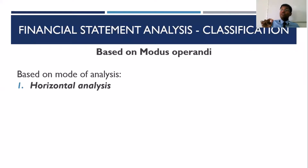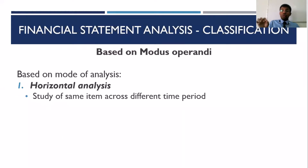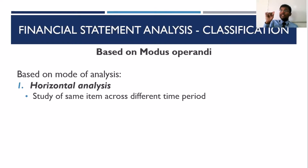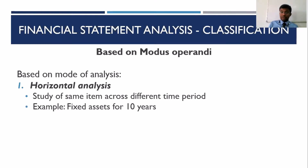The next basis for classification is mode of operation — the methodology you're following for your analysis. Based on methodology, you have horizontal analysis and vertical analysis. In horizontal analysis, you study the same item for different time intervals. For example, studying Reliance Fresh's sales over five or ten years, or studying your math performance from class one through class ten — that would be horizontal analysis.